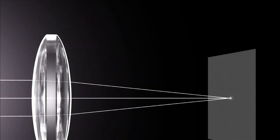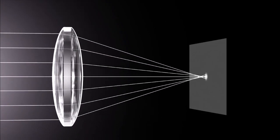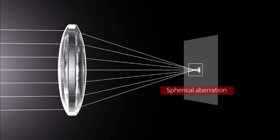The focal point where light rays passing through the center of the lens converge differs slightly from the focal point where light rays passing through the edge of the lens converge. This is called spherical aberration.